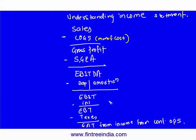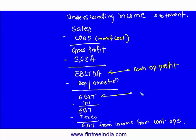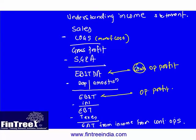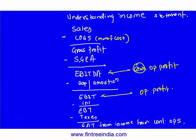Now this EBITDA here is called cash operating profit. EBITDA is called cash operating profit and EBIT is called operating profit. The difference in these two is the word 'cash.' The reason why EBITDA is called cash operating profit is because the difference between EBITDA and EBIT is depreciation, and depreciation is a non-cash expenditure.